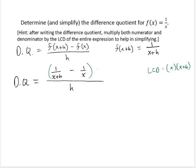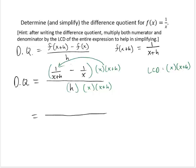So I'm going to multiply the entire numerator by x times x plus h, and the entire denominator by x times x plus h. Distributing through the first term reduces out the x plus h, leaving 1 times x. Distributing through the second term removes the factor x, leaving 1 times x plus h. In the denominator, nothing reduces, so we have h times x times x plus h.